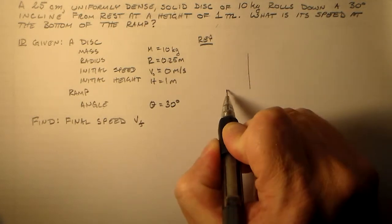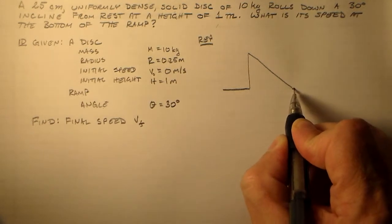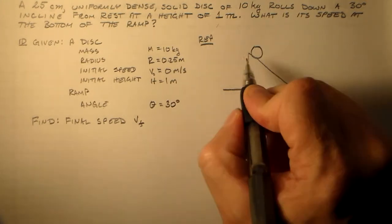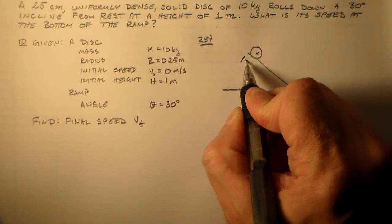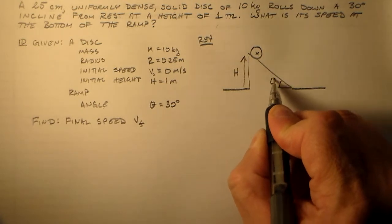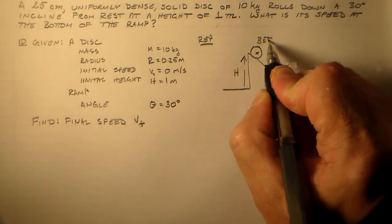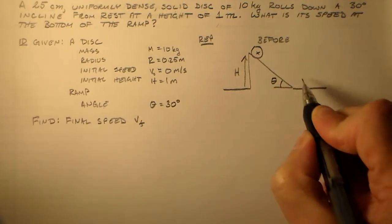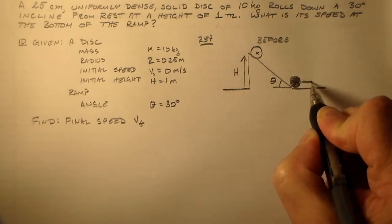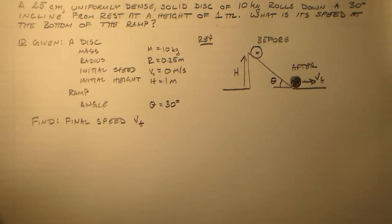For the representation, I really just for this one would like to draw this cartoon where we're starting with this guy up at a height h with no velocity and we've got this angle theta. So we just want us to see this. It's the before is up here. And then the after is when it gets down here. And it has some velocity V final. And that's the after.